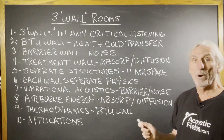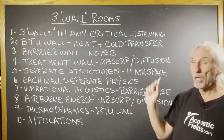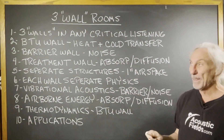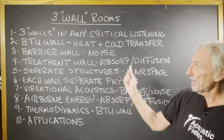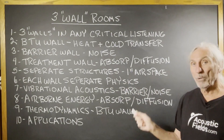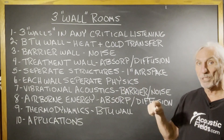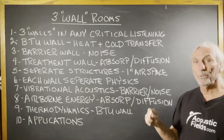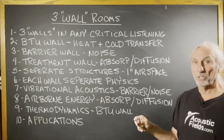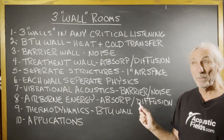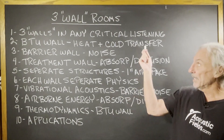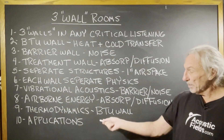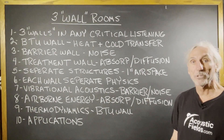The barrier wall is all about noise transmission. And then we have the treatment wall, which handles absorption and diffusion. Those are all three separate structures in any critical listening environment. We'll talk about applications later.